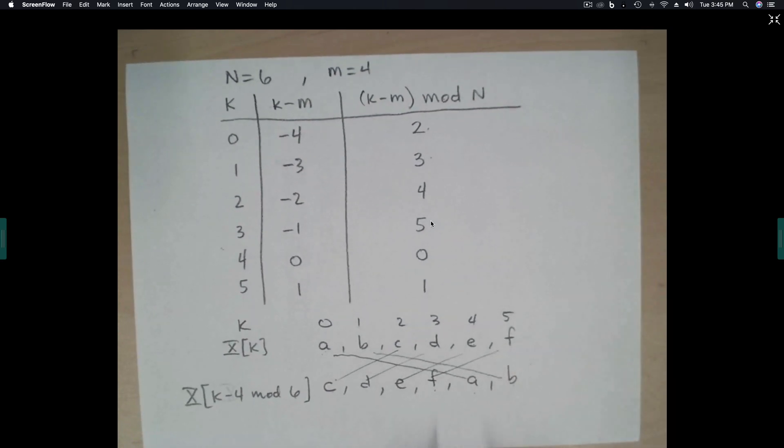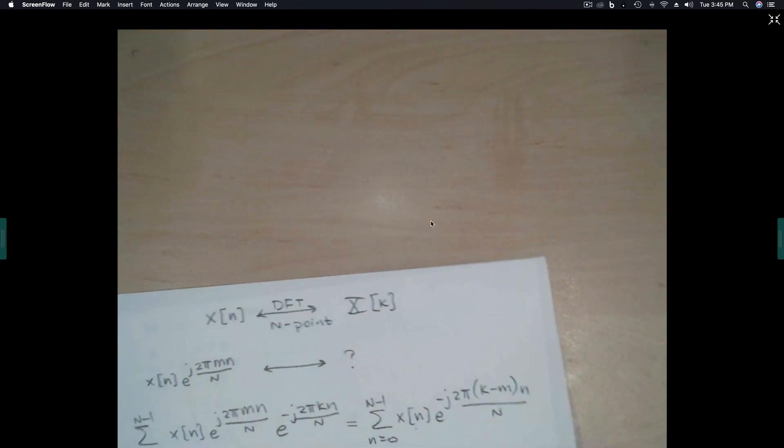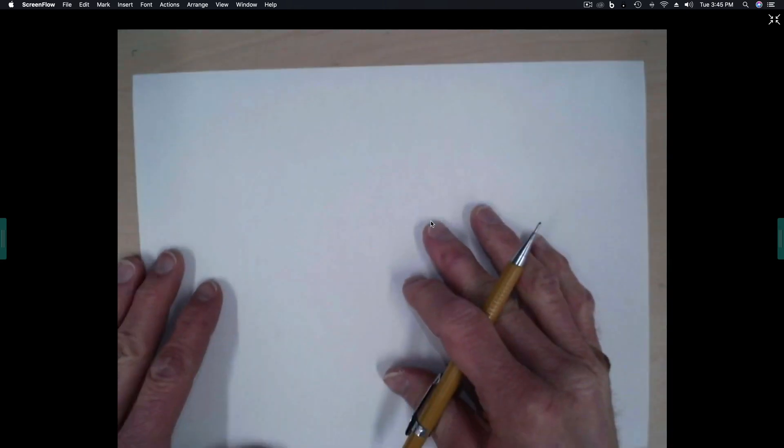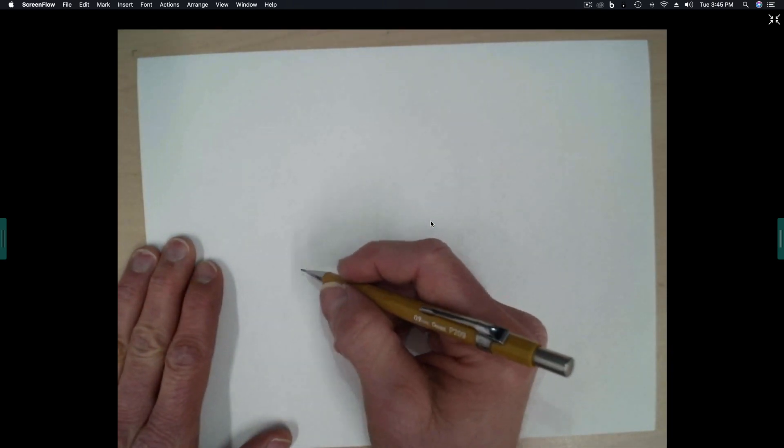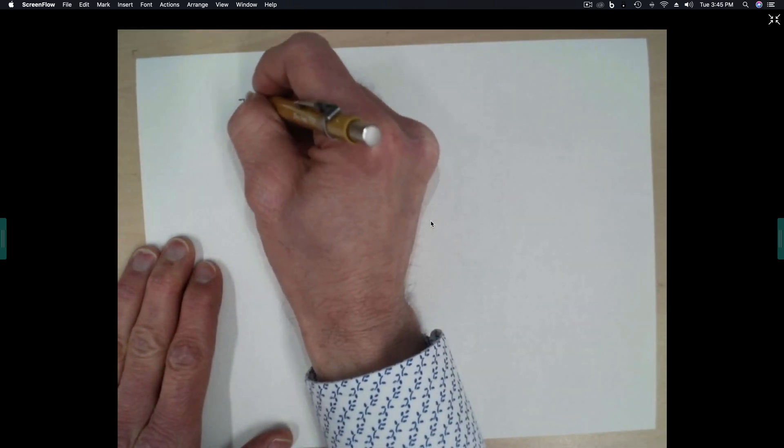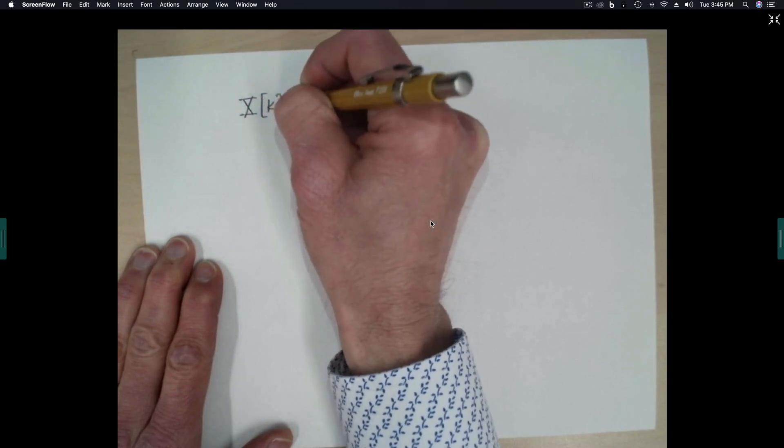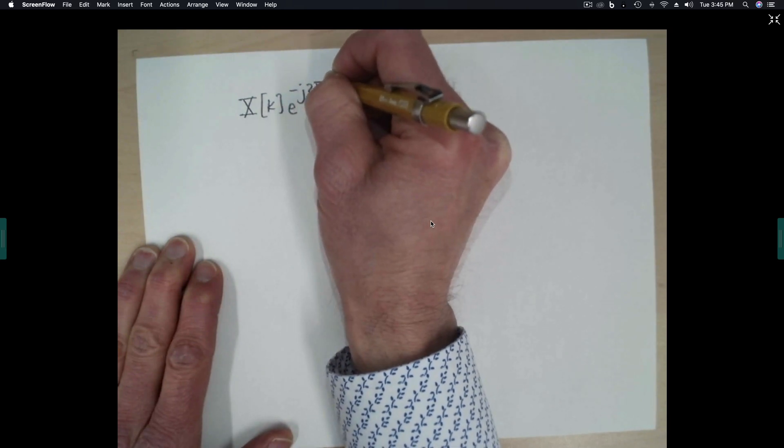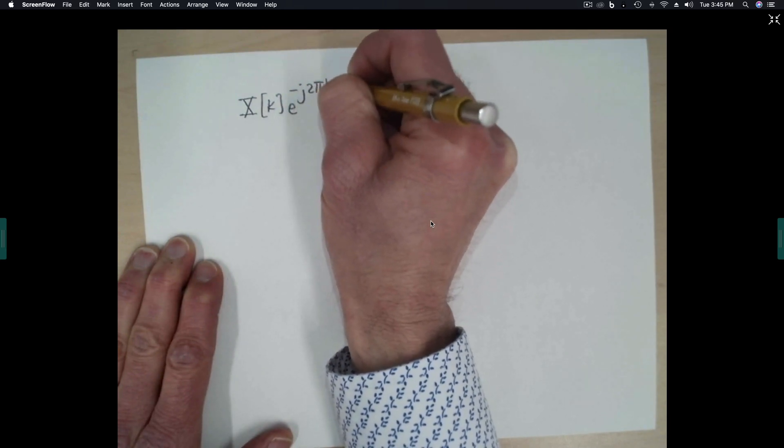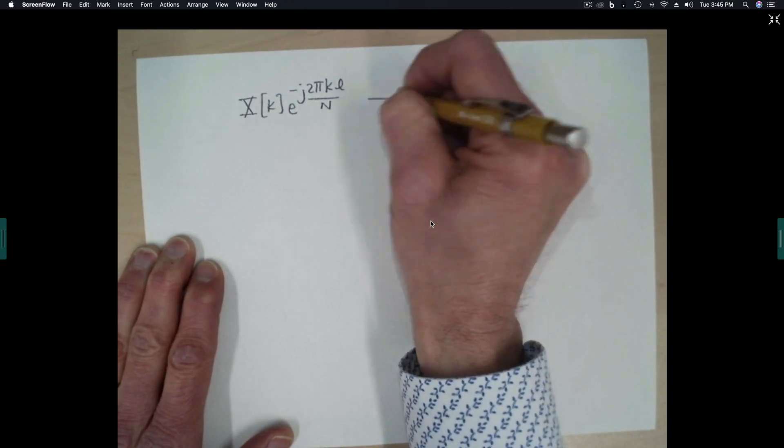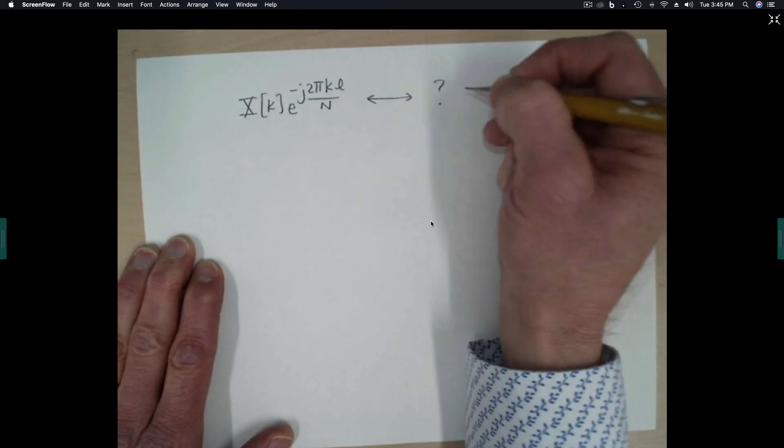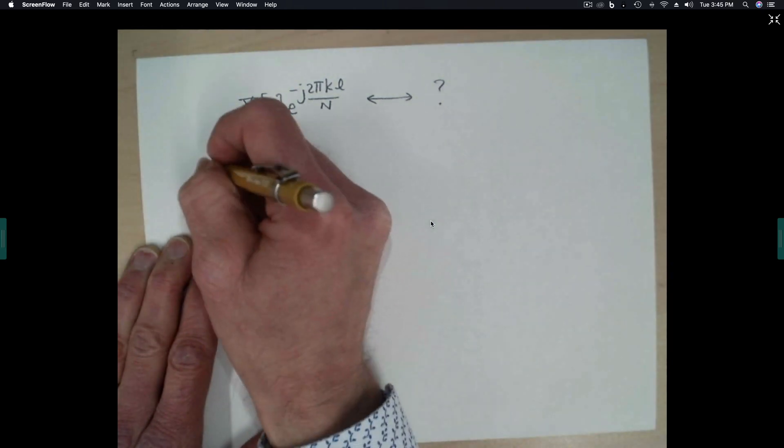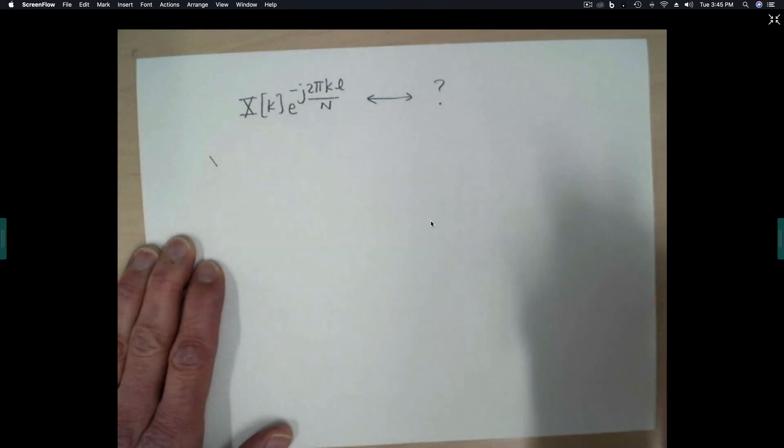So that's an example of the circular shift property. I'd like to, before we leave this, derive one other transformed pair while we're looking at this property. And this is the property where we take x, k, and we multiply in the frequency domain by e to the minus j, 2 pi, k times l, divided by n. That should transform back to something in the time domain. I'm not sure what it is. Let's calculate the inverse transform and see what happens.